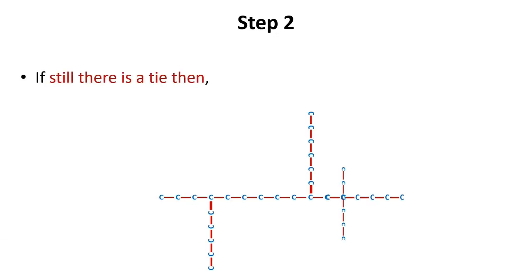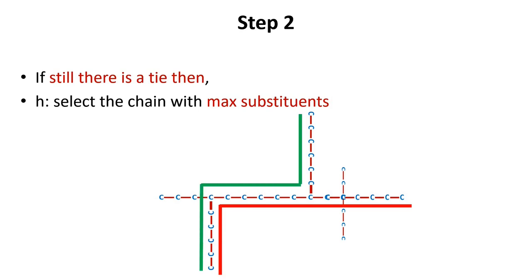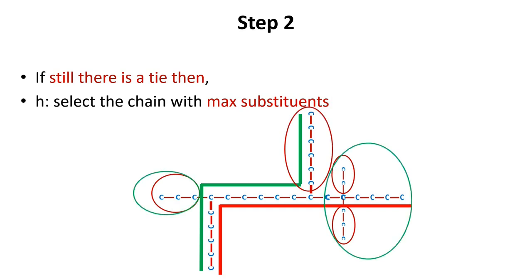If still there is a tie, select the parent chain that has more number of substituents. For example, in this compound there are two chains that are longer than the others and both have equal length. The chain with red underline has four substituents while the chain with green underline has two substituents. So the chain underlined in red color will be our parent chain.